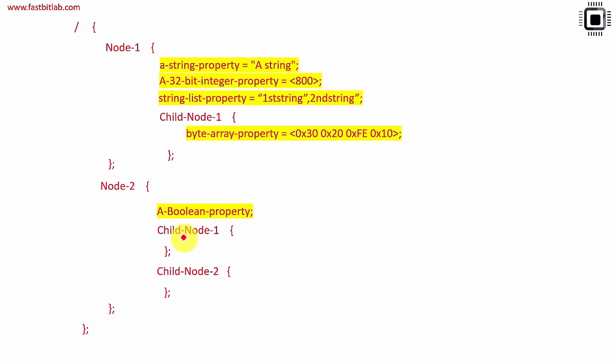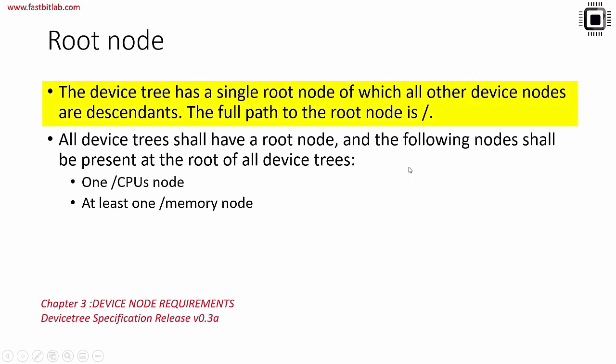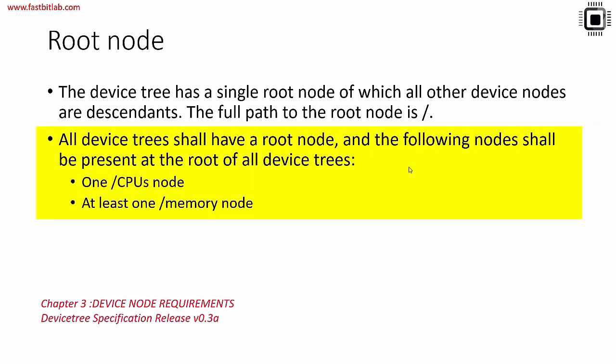This is the overview of the device tree structure. There will be a root body, and inside it you mention root level nodes — node 1 and node 2 are root level nodes, and each can have a different number of child nodes. The device tree has a single root node of which all other device nodes are descendants. The full path to the root node is just a forward slash. All device trees shall have a root node, and the following nodes shall be present at the root: one CPU node and at least one memory node. For more details, consult chapter 3 — device node requirements.